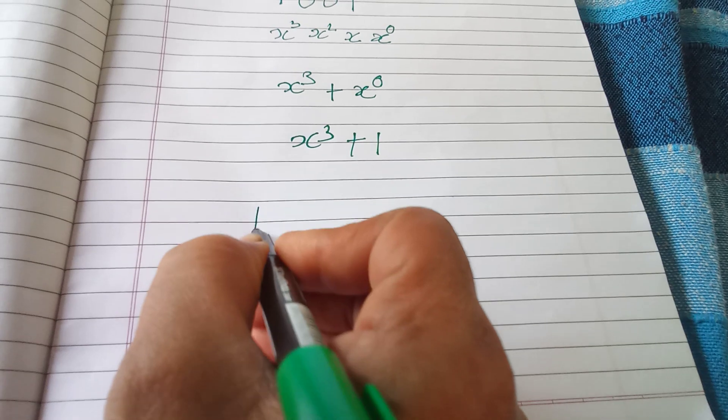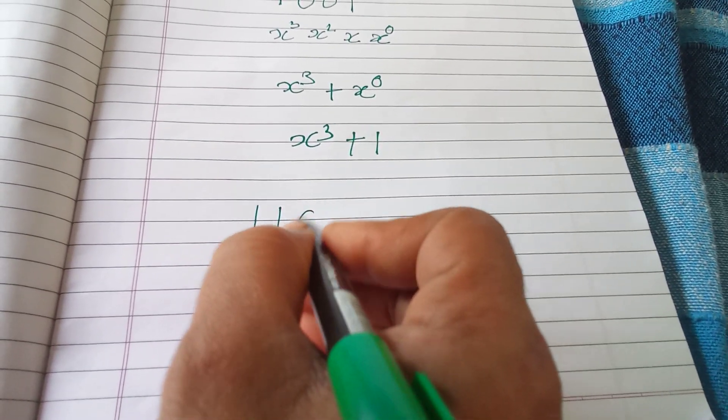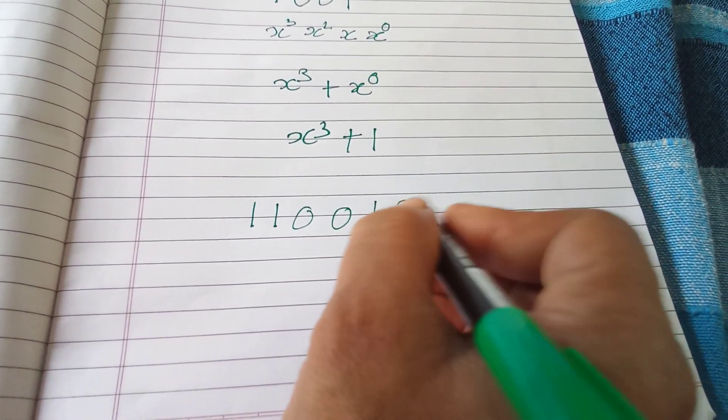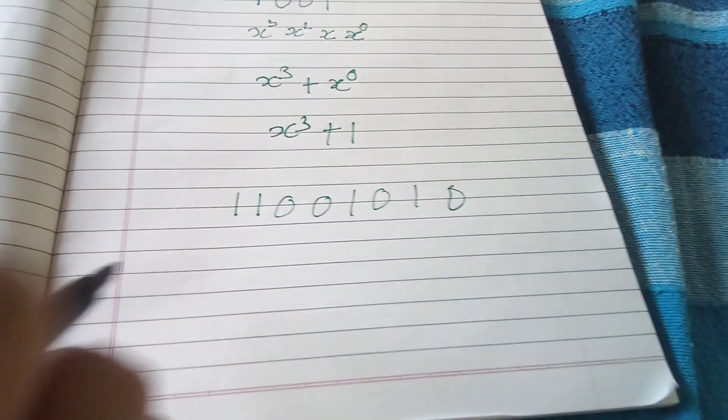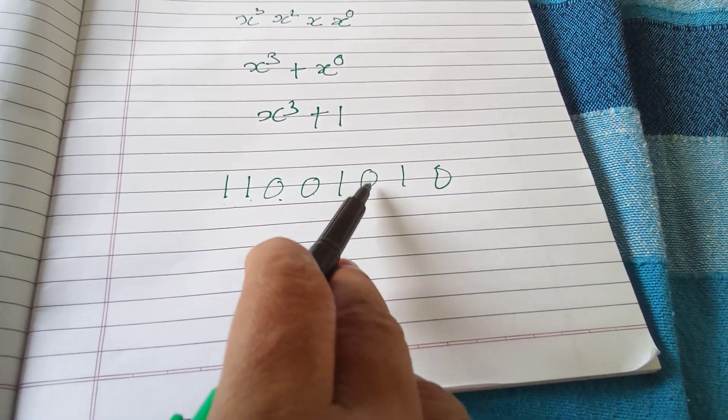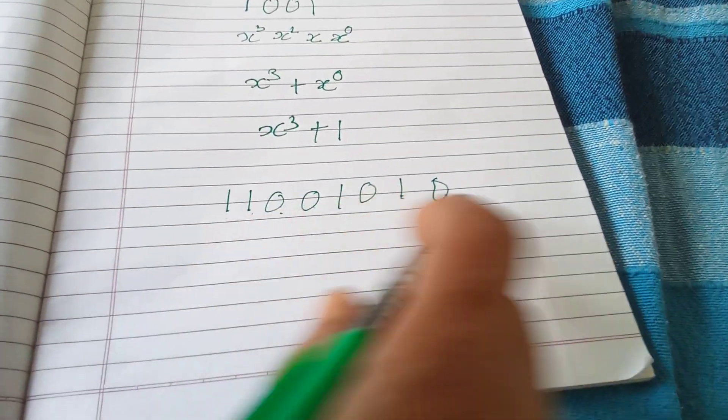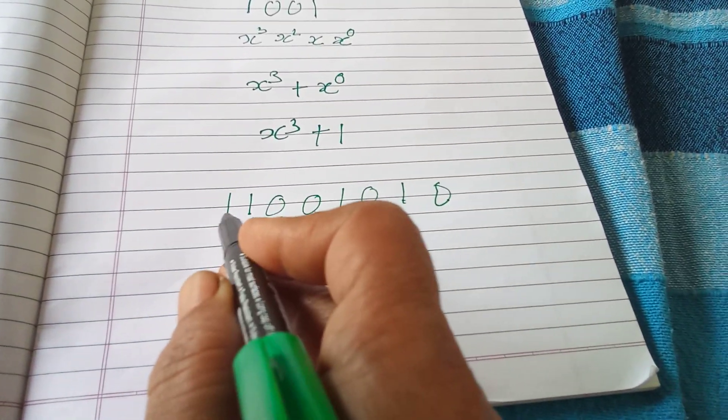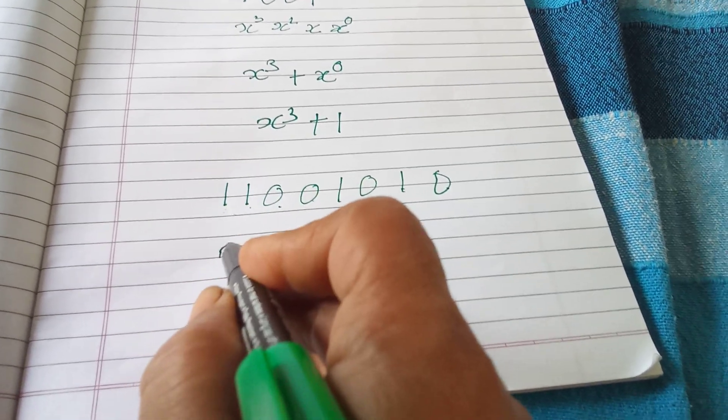Let us take another example: 11001010. Now how many bits are there? 1, 2, 3, 4, 5, 6, 7, 8. So if 8 bits are there, so this one corresponds to x⁷.